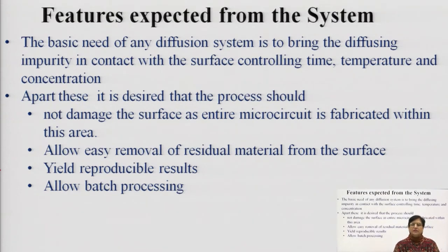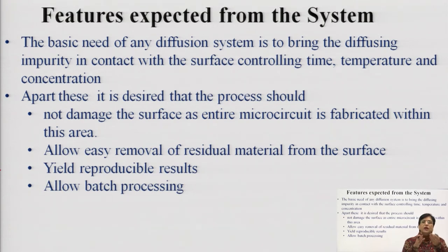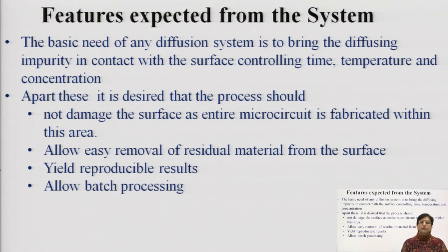For any diffusion system, the basic need is to bring the diffusing species in contact with the surface. At the same time, you need to control the time, temperature, and the concentration with which those dopant species are arriving at the surface where you want to deposit them. You must know how much quantity of dopants are to be introduced and what the temperature should be. After controlling these species, they should not damage the original surface — whatever area within which diffusion is going to happen should not affect the other micro circuit.